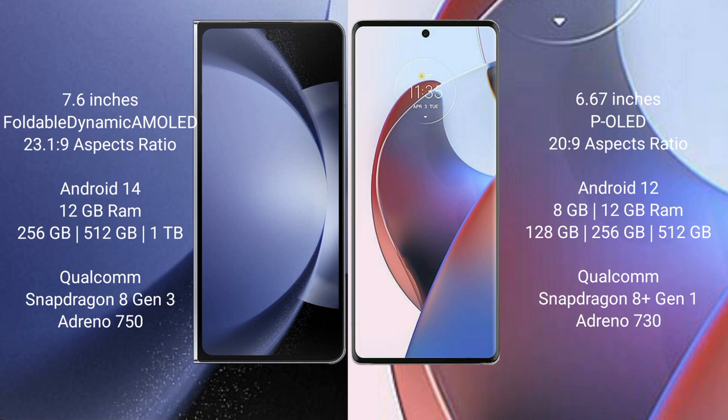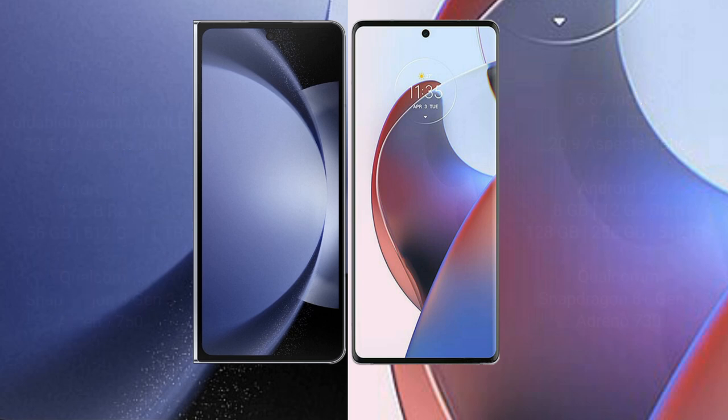Samsung Galaxy Z Fold 6 comes with 12GB RAM and 256GB or 512GB internal storage, with a Qualcomm Snapdragon 8 Gen 3 processor and Adreno 750 GPU. Motorola AX 30 Ultra comes with 8GB or 12GB RAM and 256GB or 512GB internal storage, with a Qualcomm Snapdragon 801 processor and Adreno 730 GPU.